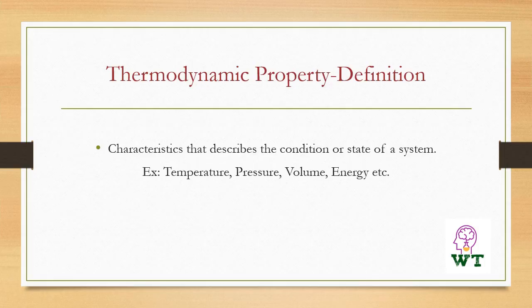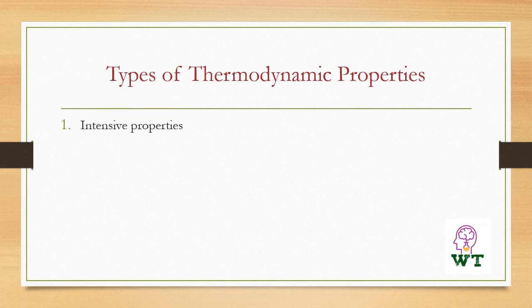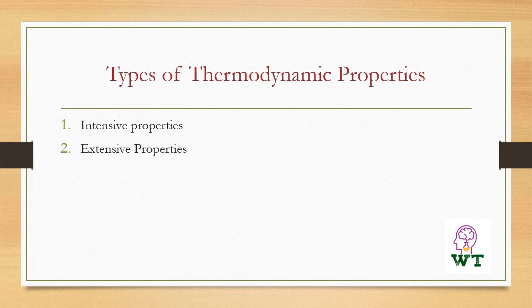Thermodynamic properties are measurable quantities. They have a definite unique value when the system is in a particular state. There are two types of thermodynamic properties: intensive properties and extensive properties.